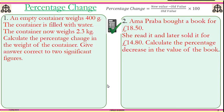An empty container weighs 400 grams. The container is filled with water. The container now weighs 2.3 kilograms. Calculate the percentage change in the weight of the container. Give answer correct to two significant figures. Now you realize that the first thing we need to think about is the units are different, so we might want to change kilograms into grams. A thousand grams is equal to one kilogram.